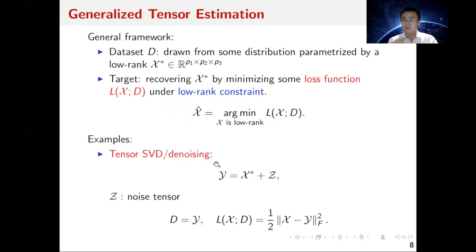This is a general framework that covers the examples we mentioned earlier. For example, in tensor SVD or denoising, imagine this Y tensor is the 4D STEM image we can observe, X star is the true underlying image we're interested in, and Z is noise. In this example, the tensor data D is Y and the loss function is the negative log-likelihood, which is the Frobenius norm between X and Y.